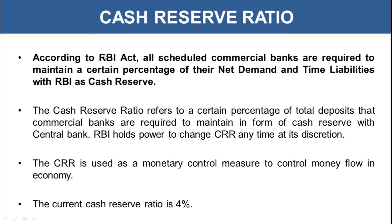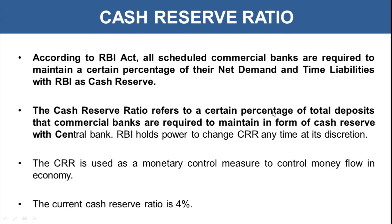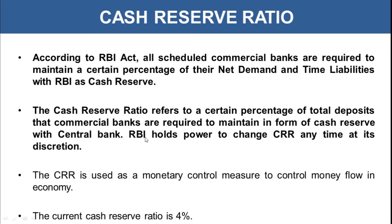RBI mandates all scheduled commercial banks to maintain a certain percentage of their net demand and time liabilities. These net demand and time liabilities are nothing but the saving deposit, current deposit, and fixed deposit — all the deposit money which the bank is holding. A proportion of all those deposits should be maintained with RBI as cash reserve. So CRR refers to a certain percentage of total deposits that commercial banks are required to maintain in the form of cash reserve with the central bank.